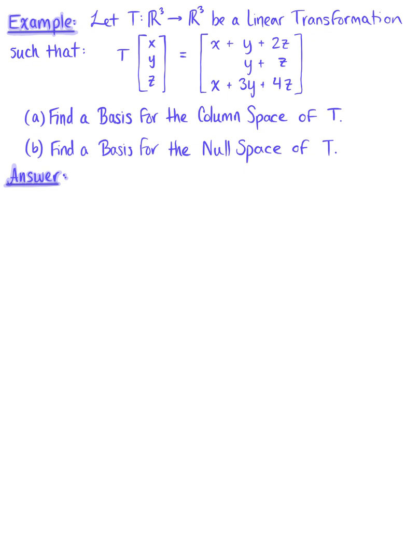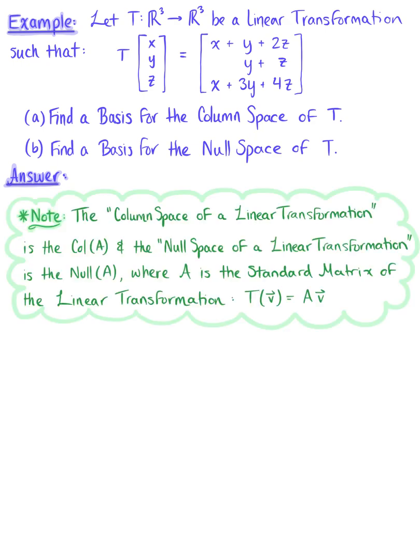Let T from R³ to R³ be a linear transformation as follows. We're being asked to find a basis for the column space of the linear transformation, and to find a basis for the null space of the linear transformation. As we begin, let's keep in mind that the column space of a linear transformation is the column space of A, and the null space of a linear transformation is the null space of A, where A is the standard matrix of the linear transformation.